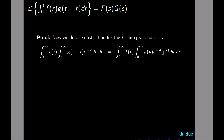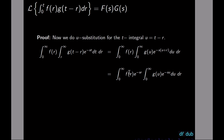Now e to the negative s times (u plus r) can be split as e to the negative su times e to the negative sr. So e to the negative su stays inside the u integral, and e to the negative sr moves over to the r integral. Now we have separate integrals in r and u, with the variables completely separated.